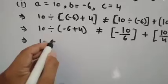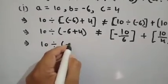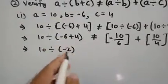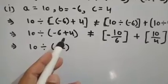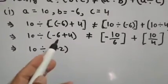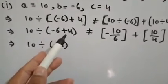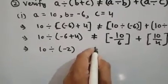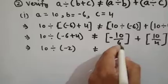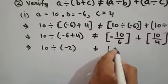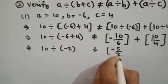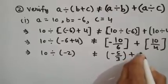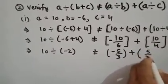10 divided by minus 2 because there are opposite signs. Rules of addition: the integers are opposite, we should subtract and put sign of greater number, which is not equal to minus 5 by 3 plus 5 upon 2.